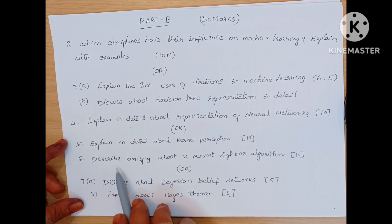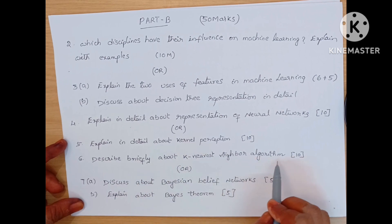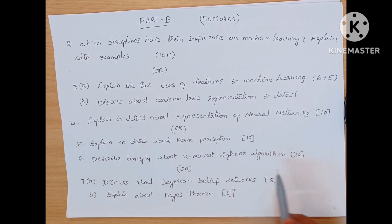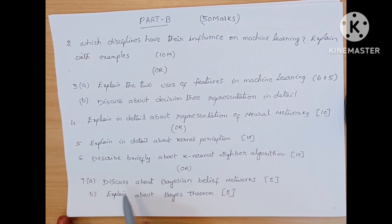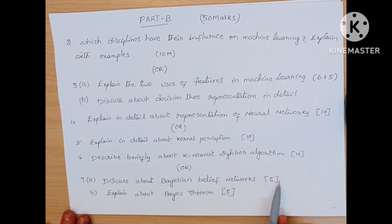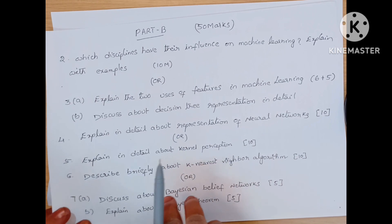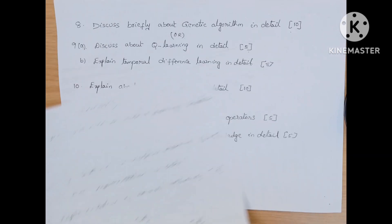Unit 3 questions: describe briefly about genetic algorithm in detail, 10 marks — I have to explain with example also. Or, the 7th question is again divided into two parts: A bit is discuss about Bayesian belief networks, 5 marks, and B bit is explain about Bayes theorem, also 5 marks. These are from Unit 3.